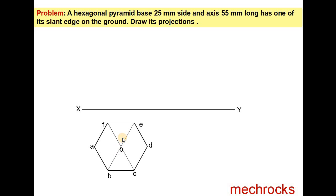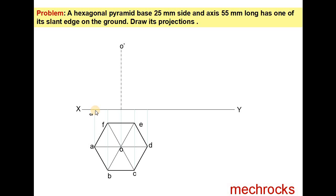Then you draw from O the axis line. The length of the axis is 5.5 cm. Name the apex as O'. Then draw the projections from A, B, C, D, E, F. This is A, this is B, this is F, this is C, this is D.